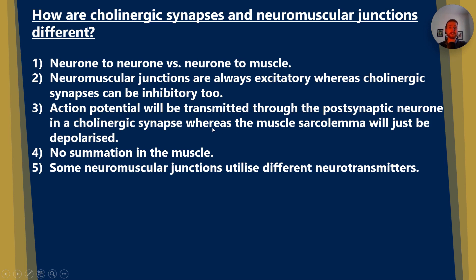The action potential will be transmitted through the postsynaptic neuron in a cholinergic synapse, whereas the muscle sarcolemma will just be depolarized. Fourth, no summation will occur in the muscle. Summation is where either more than one neuron converges on a single postsynaptic neuron in spatial summation, or the presynaptic neuron leads to more frequent release of neurotransmitter. Finally, some neuromuscular junctions utilize different neurotransmitters, whereas a cholinergic synapse will always involve acetylcholine.